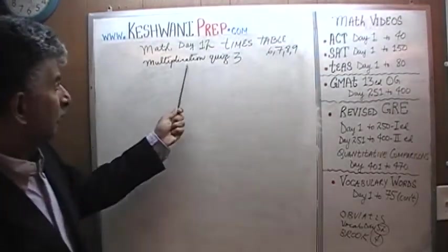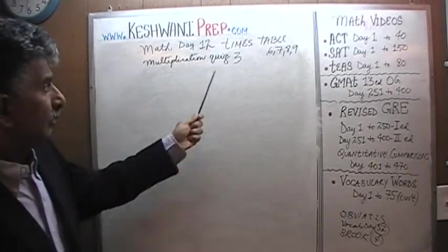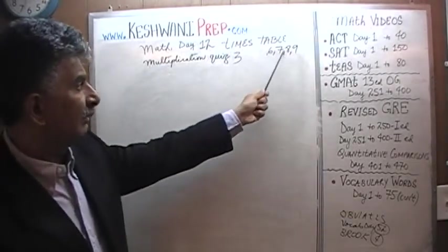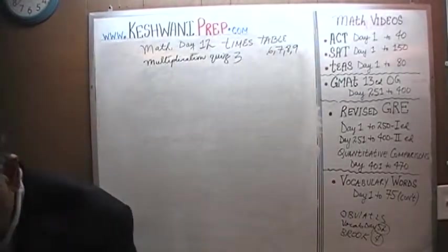Today is our lesson number 12. Today we'll have our multiplication quiz, time tables quiz number 3. The quiz is going to be on the timetables of 6, 7, 8 and 9. Let's get going, shall we?